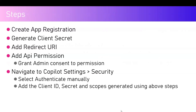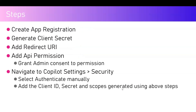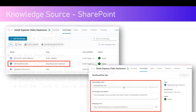To configure a SharePoint knowledge source for Copilot, you need to use portal.azure.com. You need to create an app registration, generate a client secret, configure the redirect URI, add API permissions, grant admin consent, then navigate to Copilot settings > Security and copy the client ID, secret, and scopes, then select 'Authenticate Manually'. Once done, your SharePoint site should be ready to be surfaced as grounding data.